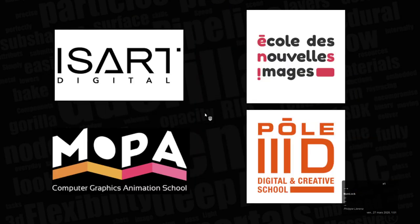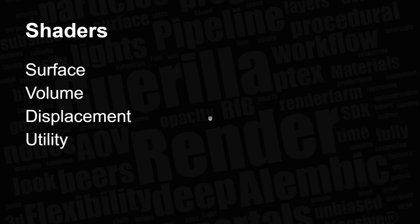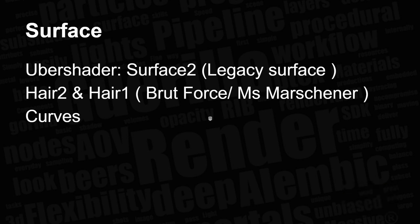Let's dive into everything we saw before and jump directly to the shader part. We're going to talk about shaders for around 20 or 30 minutes. There are four categories of shaders: the surface category, the volume category, the displacement category, and utility ones. For surface shaders, most of the time we're going to talk about Surface 2. Surface 1 is a legacy shader not used anymore in production, and there are air shaders — Air 2, Air 1 — and a curves shader also legacy, used mostly to create non-hair curves.